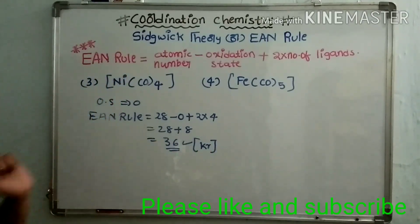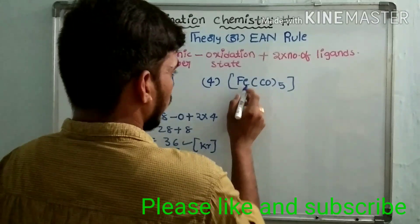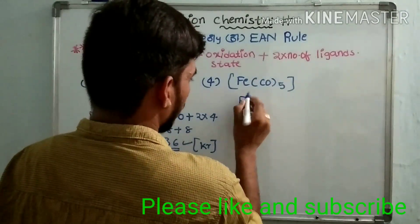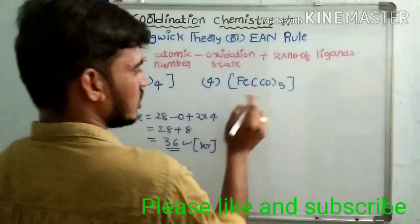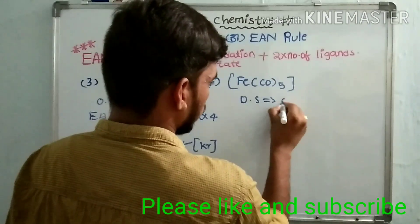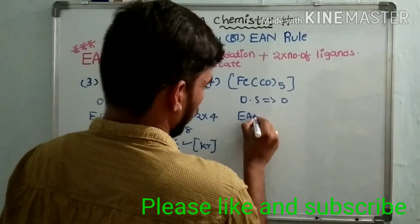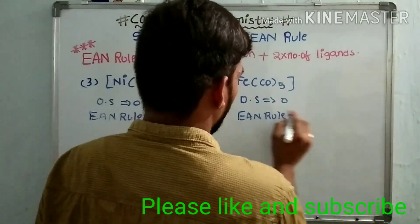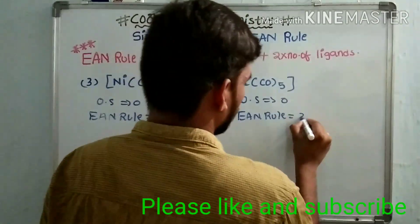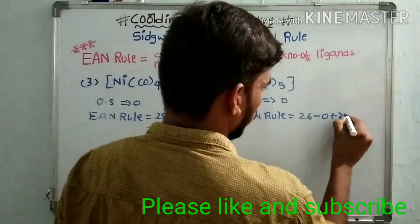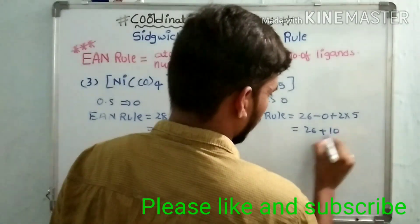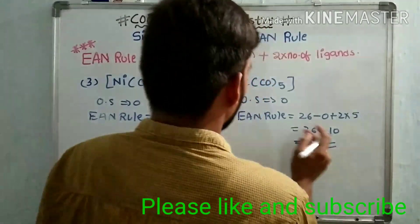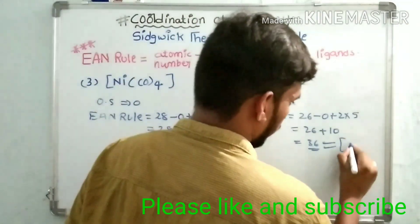For Fe(CO)₅, carbonyl is a neutral ligand so the oxidation state of iron is zero. The EAN value is: atomic number of iron is 26, EAN = 26 − 0 + 2 × 5 = 26 + 10 = 36. This is also the nearest inert gas element value of krypton, so Fe(CO)₅ is also more stable.